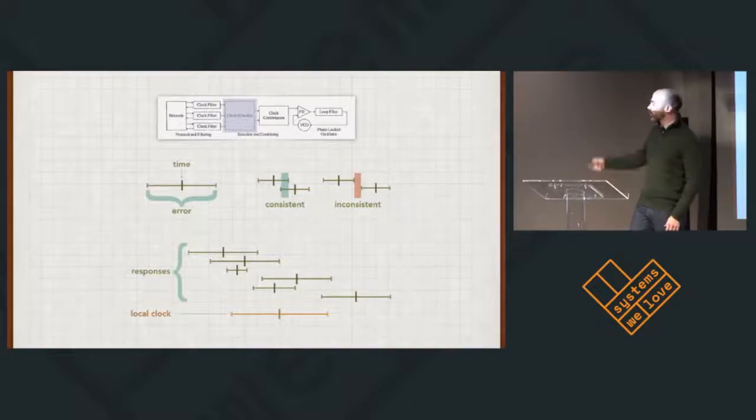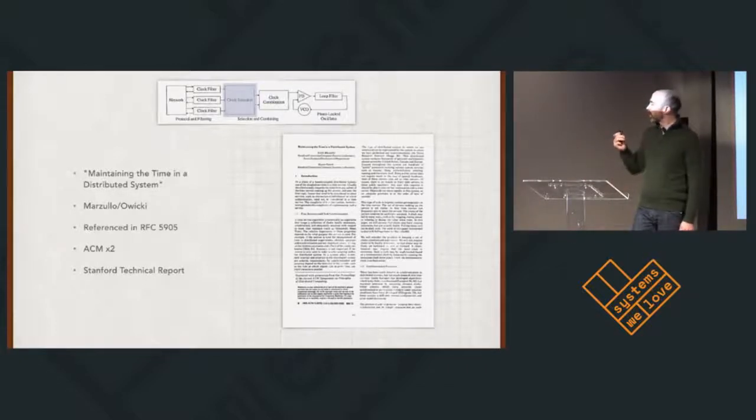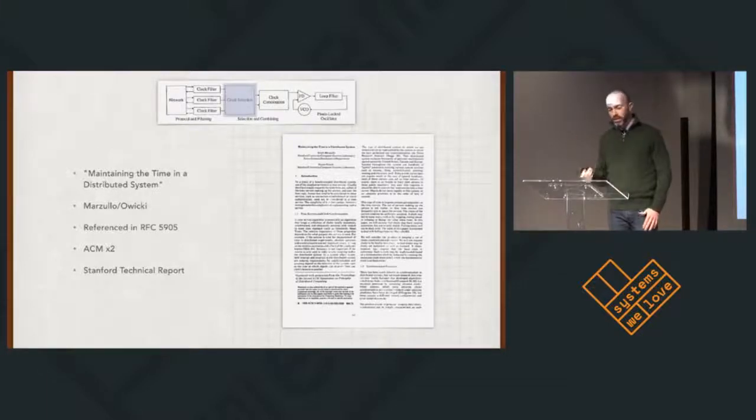Using that, we can decide which response or responses we think are correct. NTP references this paper by Keith Marzullo and Susan Owicki. You've probably heard Marzullo. He's the writer of Marzullo's intersection algorithm. And that's what NTP says it uses, a modified version of it. It references this paper, which was published a couple times by the ACM and is available as a Stanford technical report.